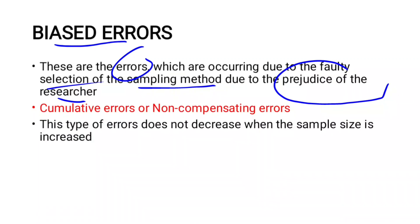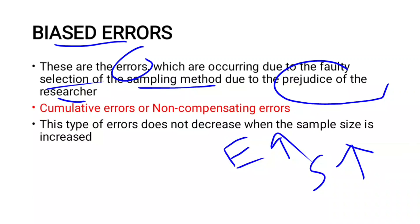Biased errors are non-compensating, meaning they cannot be reduced or compensated simply by increasing the sample size. Even if we increase the sample size, the biased errors do not decrease — they accumulate.